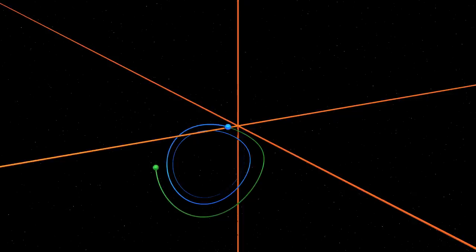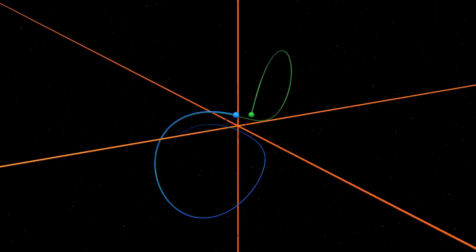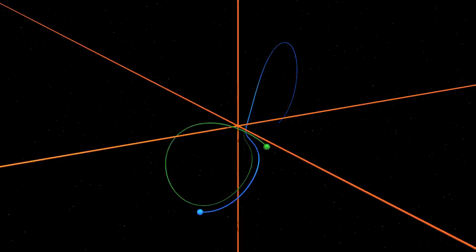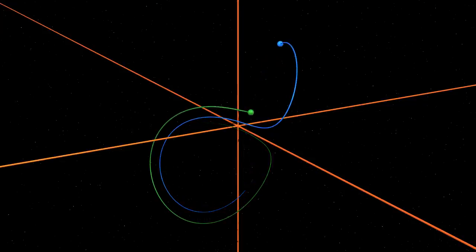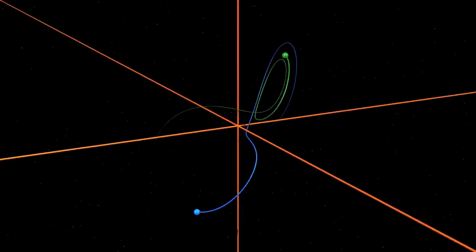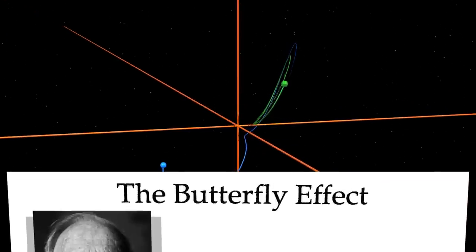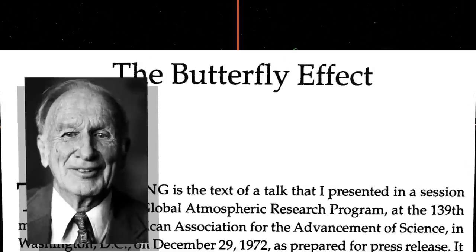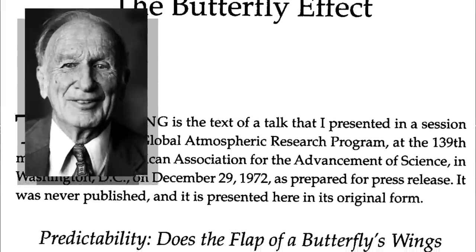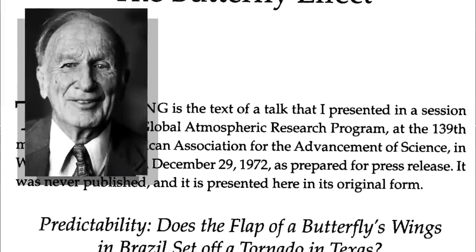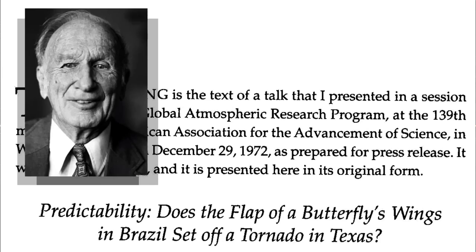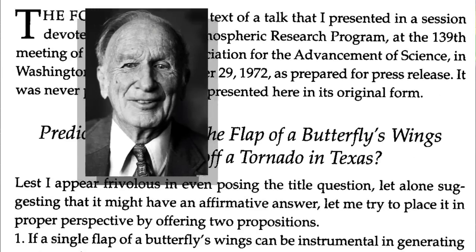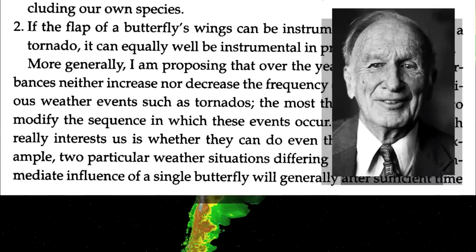In 1972, Lorenz was going to present his work at a prestigious conference. But he was late in sending in the title of his lecture. The organizer, Philip Merrilees, was in a hurry to send the program to the participants, so he chose a title for Lorenz. Predictability. Does the flap of a butterfly's wings in Brazil set off a tornado in Texas? The butterfly effect was born.